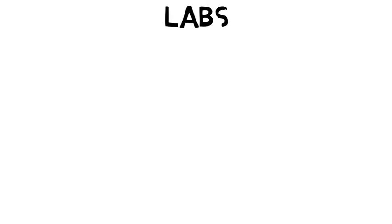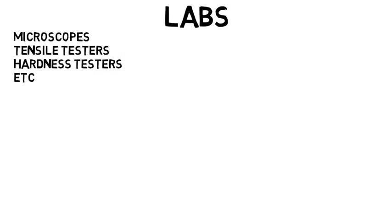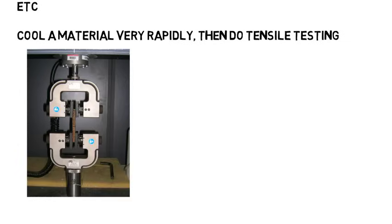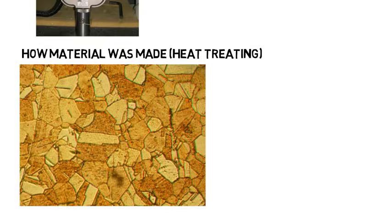When it comes to labs, the equipment you can expect to see includes microscopes, tensile testers, hardness testers, and things like that. A lab you might do is cool the material very rapidly, then do tensile testing on it — you'll use a machine that pulls the object in opposite directions, which is what tensile stress is, and you'll notice the material is very brittle, like we saw earlier. You'll also use microscopes to look at the microstructures of various materials, which is very important. Microstructures can reveal material properties, but they can even reveal how the object was made, like with heat treating and how fast it was cooled.